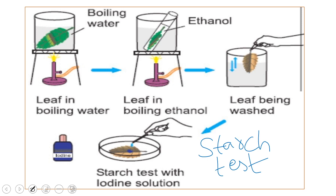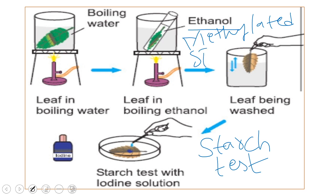The aim of this lab activity is to show that starch is present in the leaf. For the procedure, first we take a very thin leaf. Leaves are green because they contain a green color pigment called chlorophyll. We keep the leaf in a test tube filled with ethyl alcohol or methyl alcohol, then keep the test tube inside a beaker containing water. We then heat the beaker on a tripod stand.